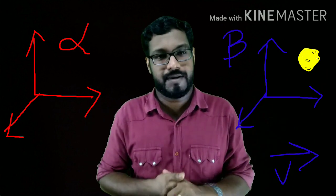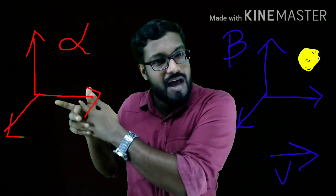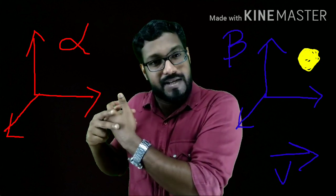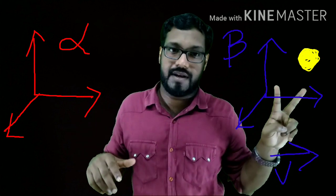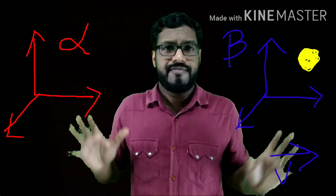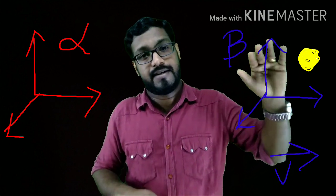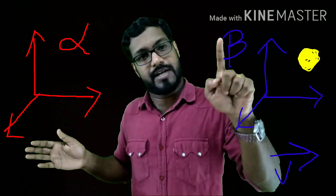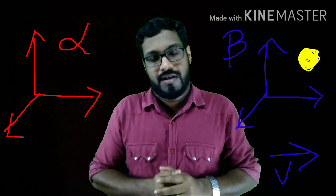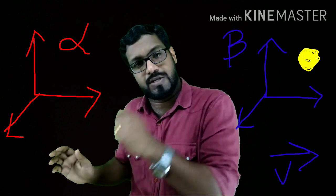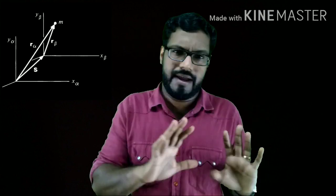These are the preliminary assumptions we take for simplicity. Now at time t = 0 the coordinate systems of alpha and beta are the same, but as time progresses the coordinate system of beta is moving away from alpha with a constant velocity V. Alpha and beta are doing an experiment: they are measuring the position of a particle at different intervals of time. From alpha's frame of reference the position of the particle is R_alpha, and from beta's frame of reference the position of the particle is R_beta.